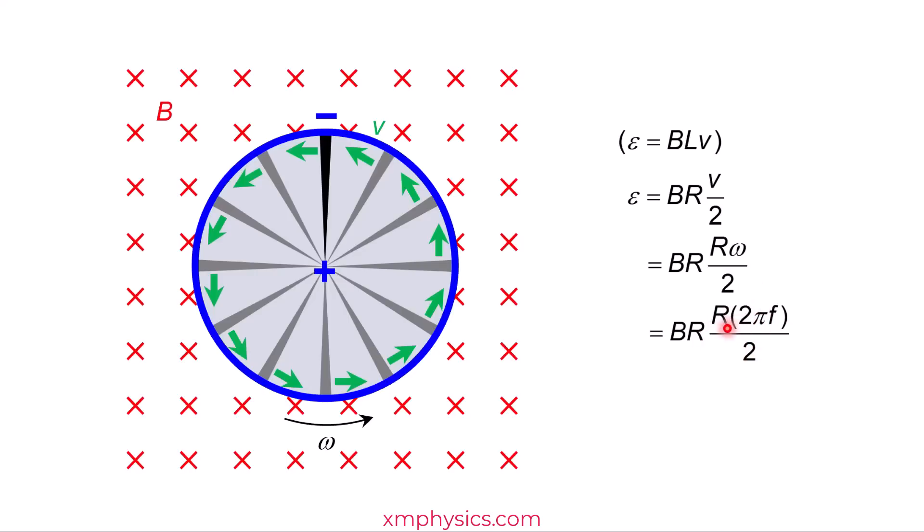πR² is just the area of the disc. So the induced EMF is, tadaa, equals to BAf. If you are following, you may ask this question: BAf is the induced EMF across this wire, but the entire disc actually consists of many wires, isn't it?